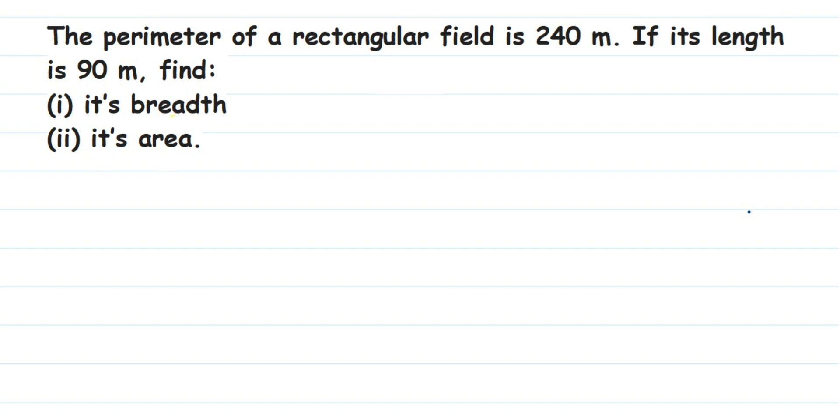We have given the perimeter of the rectangular field is 240 meters, and we have also given the length. We have to find out first the breadth and then the area. Since we have the perimeter, we're going to use it to find the breadth.